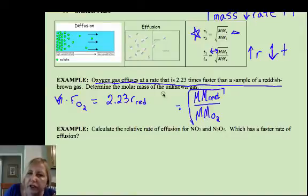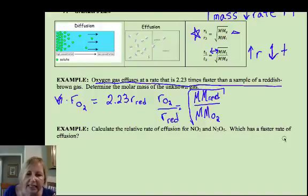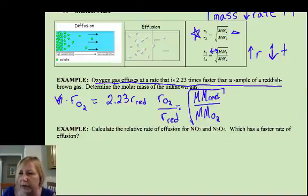Now, rates are inversely proportional. So, that puts the rate of oxygen on top and the rate of my unknown red gas in the denominator or velocity. I'm using those interchangeable. I know they're not identical, but hopefully you will forgive me for that.